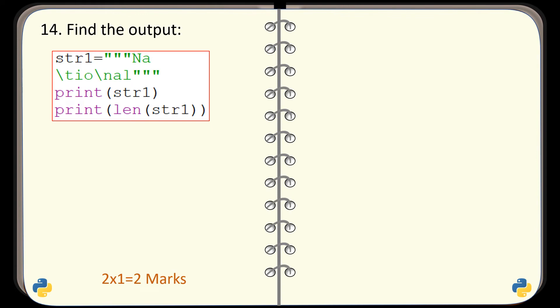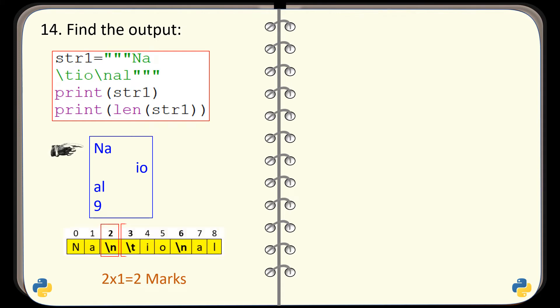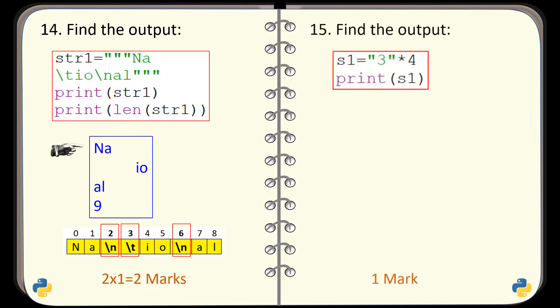Question number 14. See the code and find the output. The correct output is this one. Notice that the length of the string is 9. The string contains three escape sequences, and each escape sequence is counted as a single character. Question number 15.